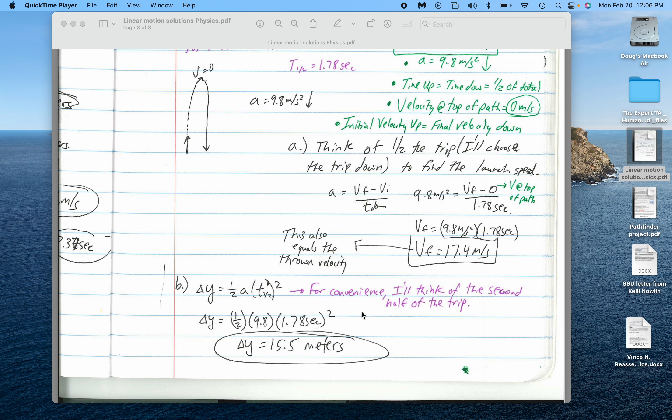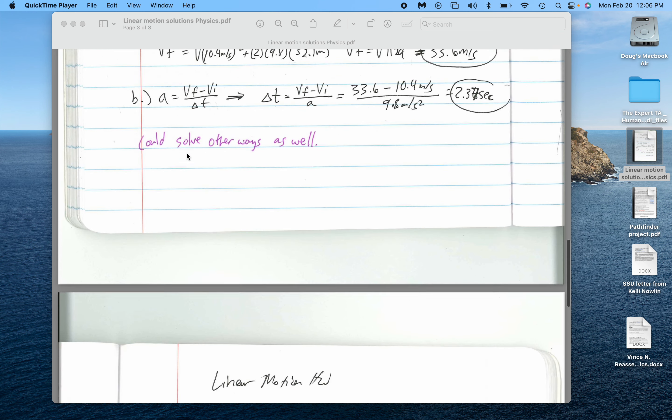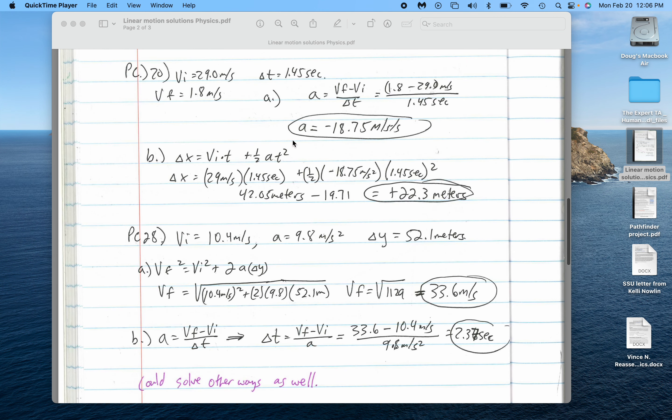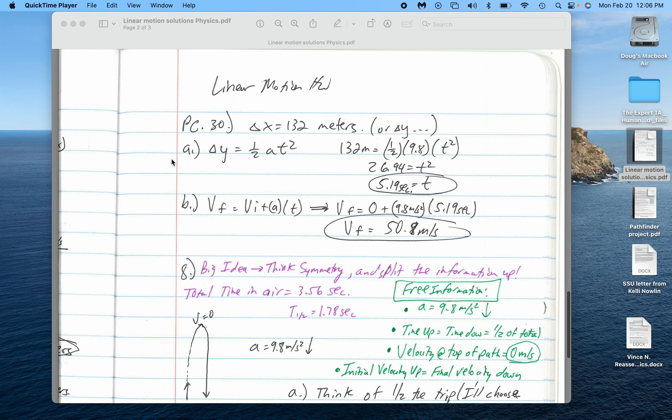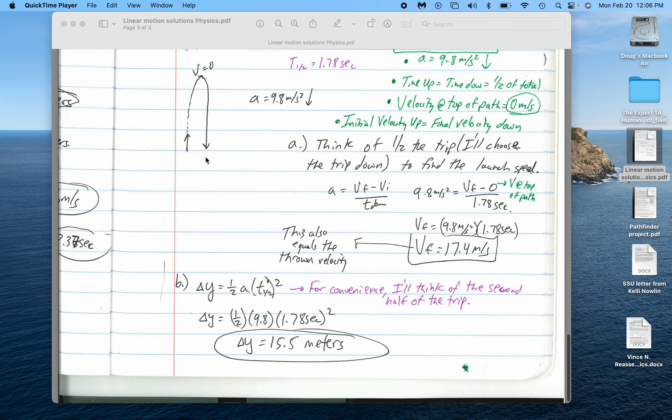To find the maximum height of the ball, again, I can think of half the trip. I wouldn't think of the whole trip, because if I used a version of this formula here for the whole trip, that would give me 0, because it ends up at the same height at which it's thrown.